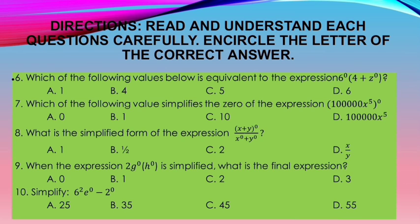Which of the following values simplifies the expression: quantity 100,000x to the power of 5, to the power of 0? A. 0, B. 1, C. 10, D. 100,000x to the power of 5. Number 8: What is the simplified form of quantity x plus y to the power of 0, over x to the power of 0 plus y to the power of 0? A. 1, B. 1 half, C. 2, D. x over y. Number 9: When 2g to the power of 0, quantity h to the power of 0, is simplified, what is the final expression? A. 0, B. 1, C. 2, D. 3. Number 10: Simplify 6 to the power of 2, e to the power of 0, minus 2 to the power of 0. A. 25, B. 35, C. 45, D. 55.